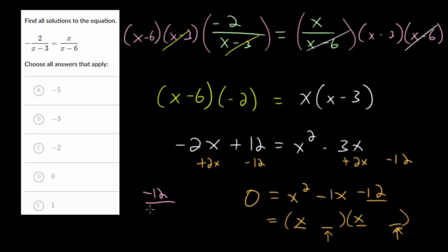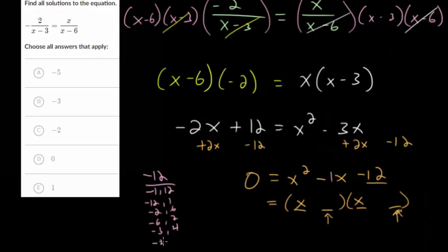So the numbers that multiply to negative 12, we could have minus 1 and 12, minus 12 and 1. We could do minus 2 and 6, minus 6 and 2, or minus 3 and 4. Or we can do minus 4 and 3. But remember, they have to add up to negative 1. And that would be minus 4 and 3. So x minus 4 and x plus 3 will be the factored form of this. And at this point, you could check it by re-multiplying everything out.